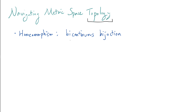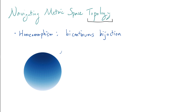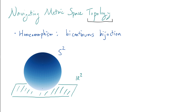A homeomorphism by definition is a bicontinuous bijection. Let me give you an illustration. Here I have what's called S2 — a two-dimensional sphere, the surface of the Earth as you can imagine. Now let's imagine R2, the XY plane, lying underneath S2 like this. I claim that if I remove a point from S2 — specifically the north pole — then S2 minus a point as a space is the same space as R2. I claim that these two are the same in some sense.